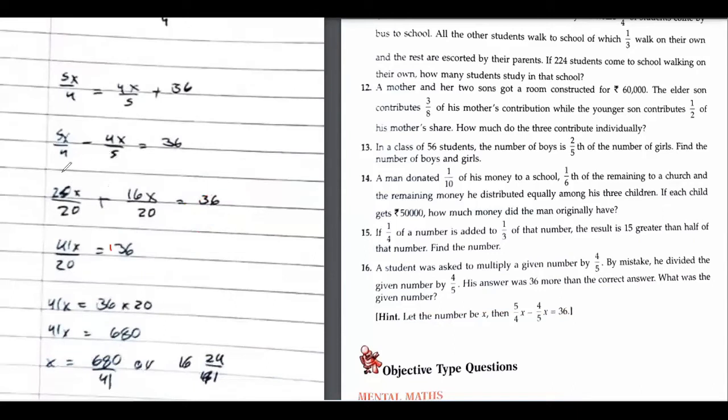So 20, multiply by 5 becomes 25. This is 25, this is 16. Wait, was it a plus or a minus? This was minus, right?